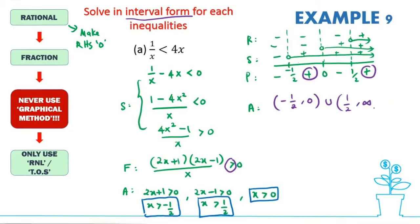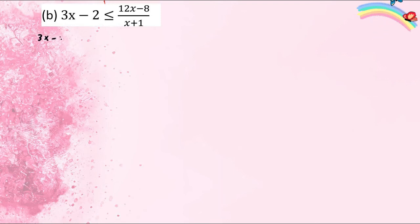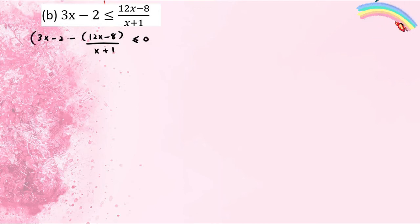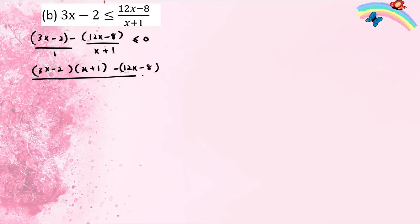Now let's do the next example: 3x − 2 ≤ (12x − 8)/(x + 1). The general idea is to simplify first. Move everything to the left: 3x − 2 minus (12x − 8)/(x + 1) ≤ 0. Equate the denominator — this is over 1 — so we get [3(x − 2)(x + 1) − (12x − 8)] all over (x + 1) ≤ 0.